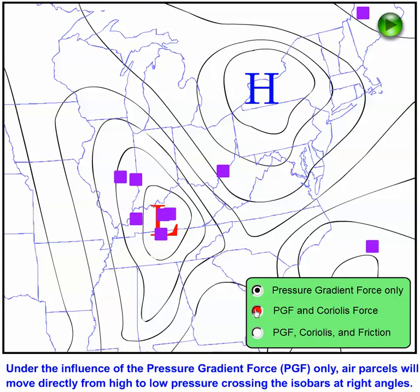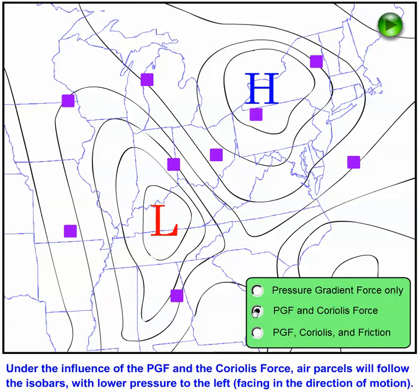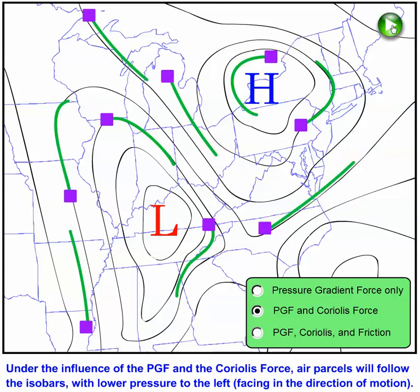Now let's add in the Coriolis force. If only the pressure gradient force and the Coriolis force act on air parcels, they're in a state of geostrophic balance and the Coriolis force turns the air parcels 90 degrees to the right of the original direction of motion in the northern hemisphere. So air parcels in geostrophic balance flow parallel to local isobars, with lower pressure on the left of the direction of motion. You can also see the general counterclockwise flow around the low pressure and the clockwise flow that results around highs.